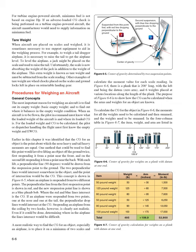Procedures for Weighing an Aircraft — General Concepts: The most important reason for weighing an aircraft is to find out its empty weight (basic empty weight) and where it balances in the empty weight condition. When an aircraft is to be flown, the pilot in command must know the loaded weight and where the loaded CG is. For the loaded weight and CG to be calculated, the pilot or dispatcher must first know the empty weight and EWCG.